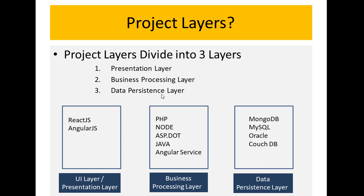If someone asks you what the project layers are, you can say: UI layer or presentation layer, business processing layer, and data persistence layer. Your layers concept should now be clear. If someone asks what the UI layer is, you can simply explain that only the front-end handles it — meaning whatever HTML and CSS is related to the view, that covers the UI layer. If we need to do something on the server side or make a connection, then we have to depend on other technologies.